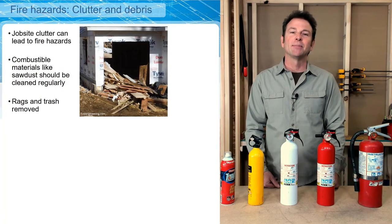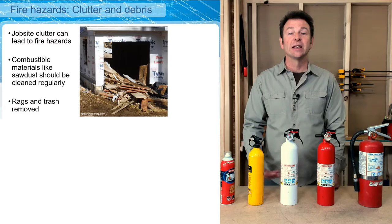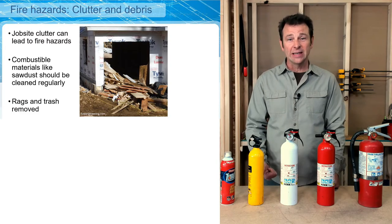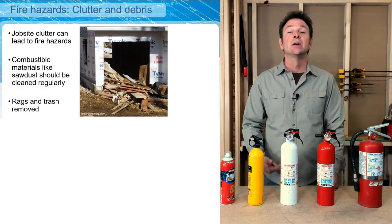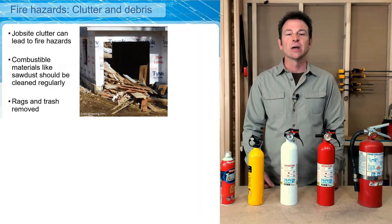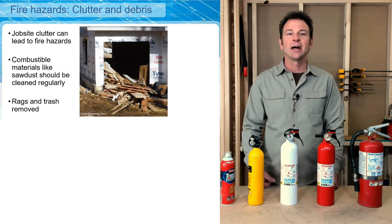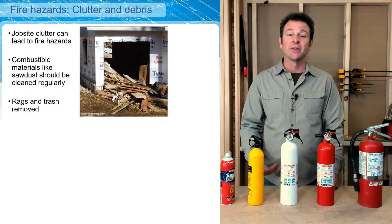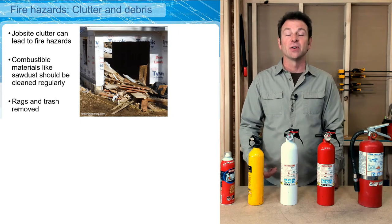Here you see an example of bad housekeeping. Job site clutter and waste can literally make it hard to exit the building, and also encourage a fire to start, spread, and move very quickly. These are all combustible materials, and the way they're piled up, it would be very dangerous if a fire started here. Even rags that have solvents on them placed in a trash can are notorious for starting fires.